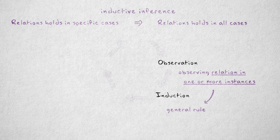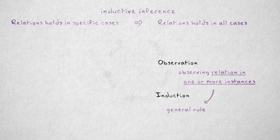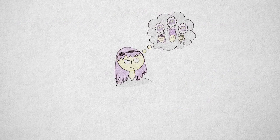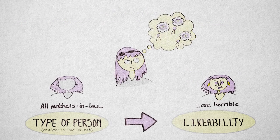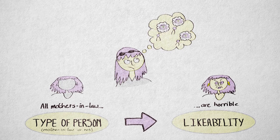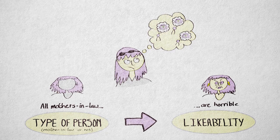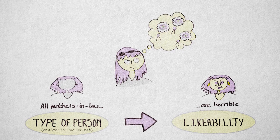For example, from the observation that my friends and I have horrible mothers-in-law, I can induce the general rule that all mothers-in-law are horrible. Of course, this rule or hypothesis is not necessarily true - it could be wrong.